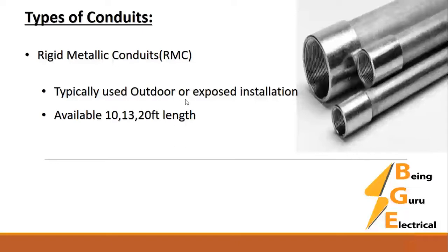The first type is Rigid Metallic Conduit, or RMC. It is typically used for exposed installations in residential, commercial, and industrial buildings — running on building fabric, inside false ceilings, or exposed on walls. It is available in 10ft, 13ft, and 20ft lengths. You can see the rigid metallic conduit in the pictures.